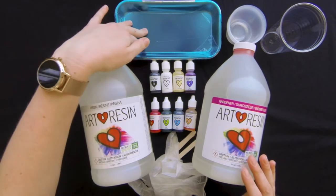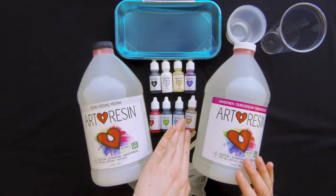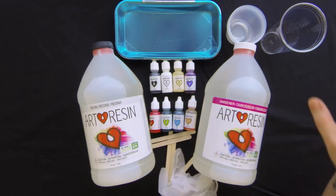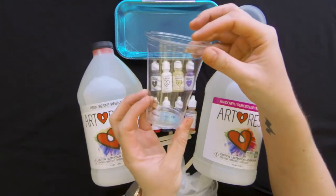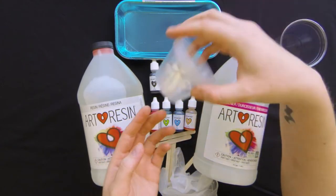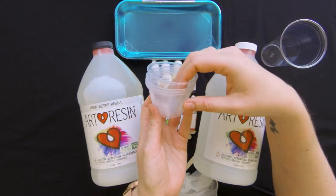We also have the small tray we'll be using. We have some resin tint, your very important gloves, some popsicle sticks for mixing. We have a graduated cup so we can measure exactly how much we have going on, and then some other random mixing cups for our different colors.